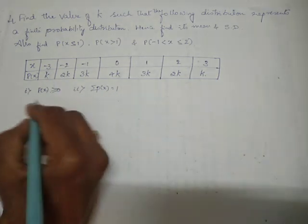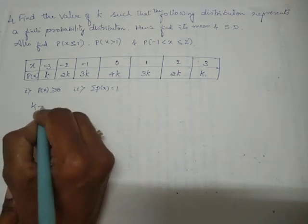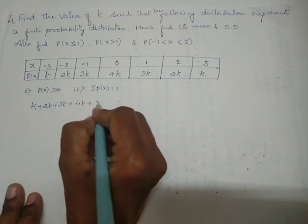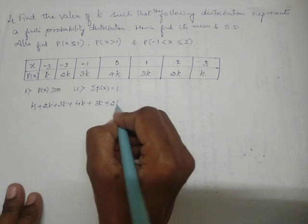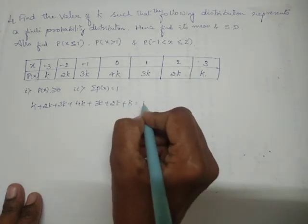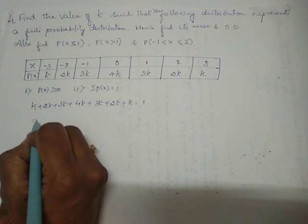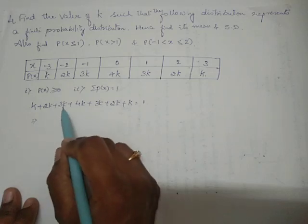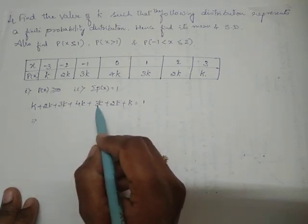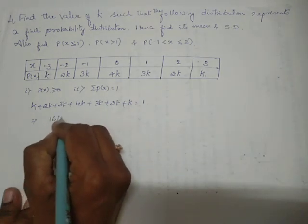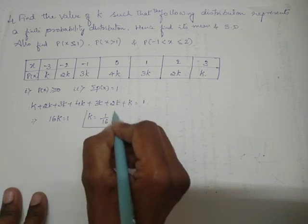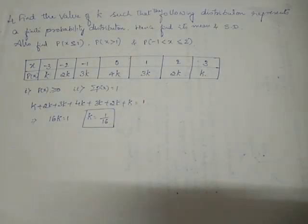Using the second condition: k + 2k + 3k + 4k + 3k + 2k + k = 1. Adding the coefficients: 1 + 2 = 3, 3 + 3 = 6, 6 + 4 = 10, 10 + 3 = 13, 13 + 2 = 15, 15 + 1 = 16. So 16k = 1, therefore k = 1/16. We have found the value of k — that was the first part of the question.